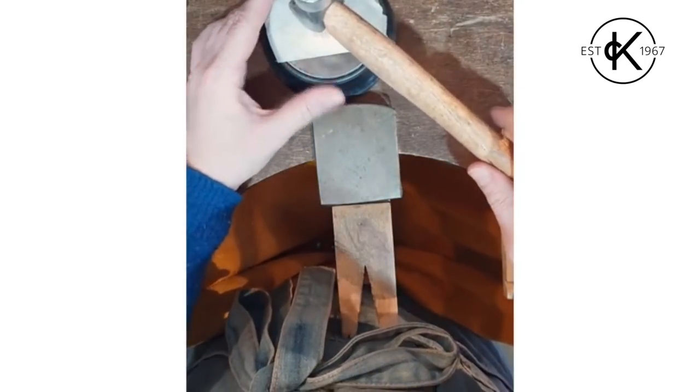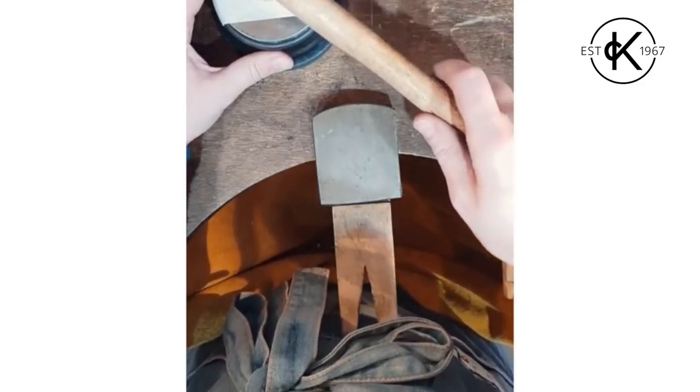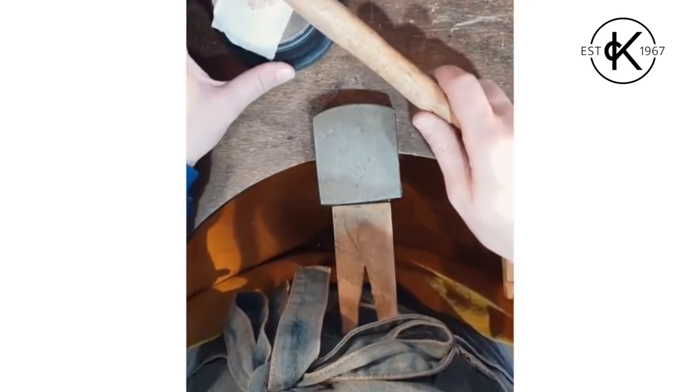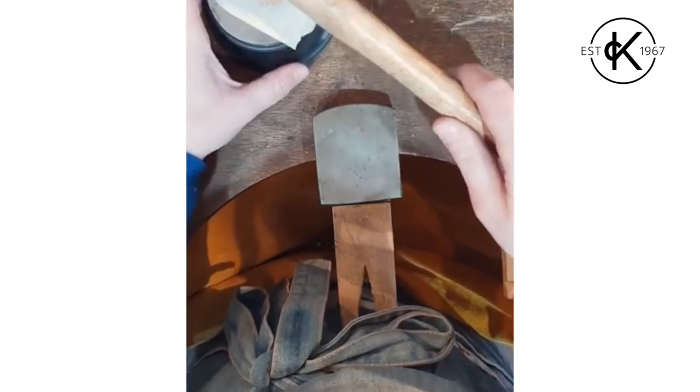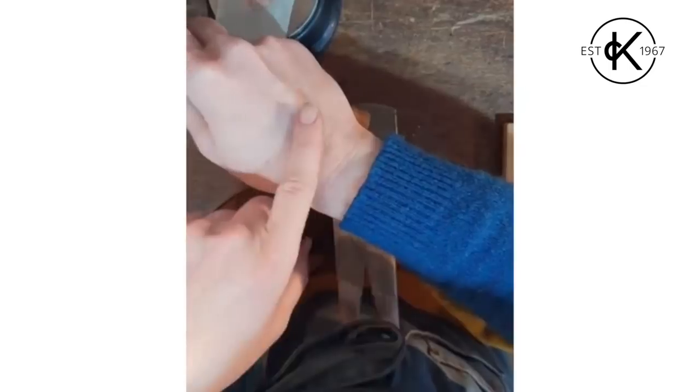So in theory, what you're aiming for—I'll move this over so you can see a bit better—is to be able to bounce the hammer more or less at the same point and you can move your work. And then that way you're getting nice even blows and you're not putting any strain on your arm.